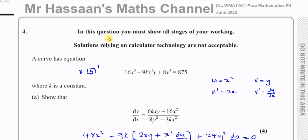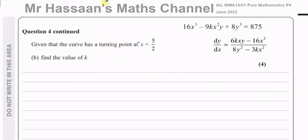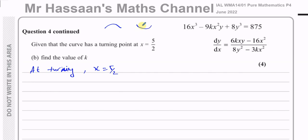For part b, given that the curve has a turning point at x = 5/2, we need to find the value of k. At a turning point the gradient is zero, so dy/dx = 0. That means when x = 5/2, dy/dx equals 0.